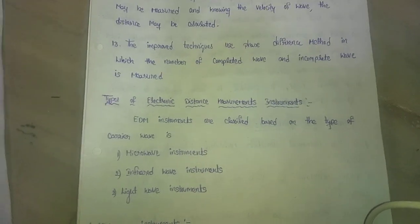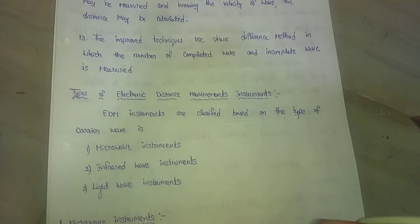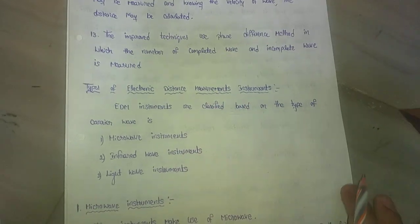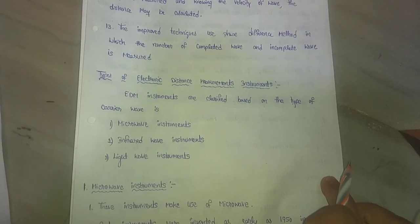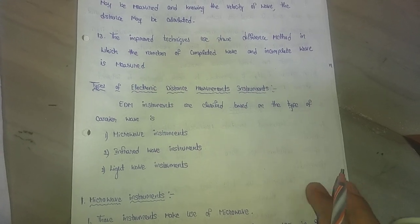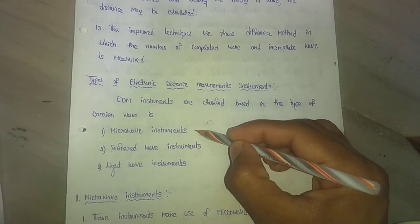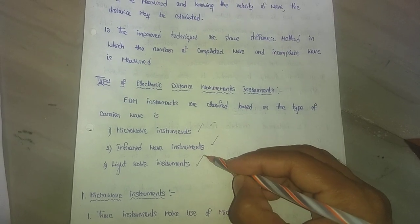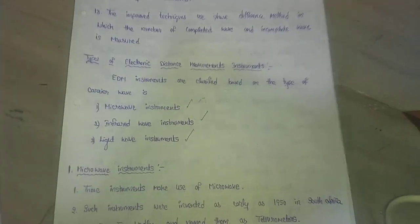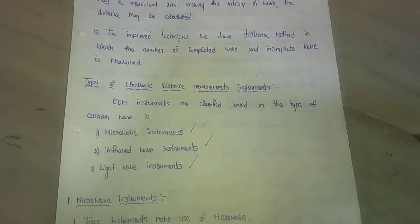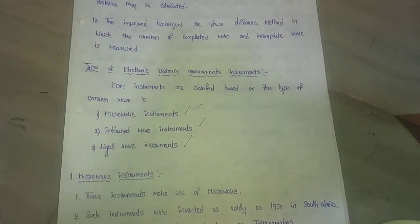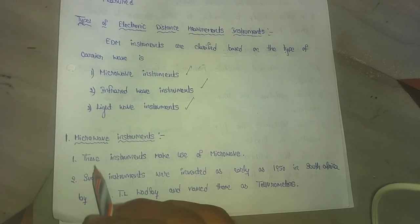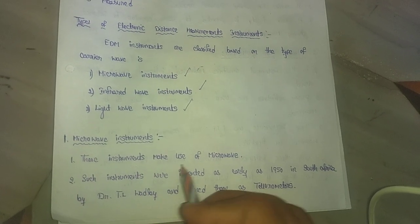Types of electronic distance measurement instruments: Based on the EDM types, there are microwave instruments, infrared wave instruments, and light wave instruments. There are three types of methods in electronic distance instruments.